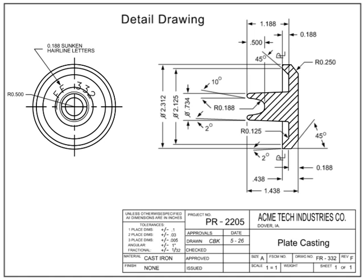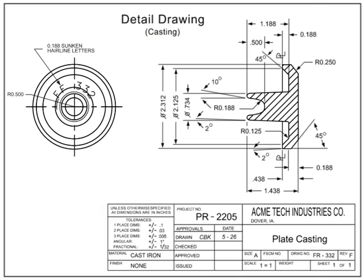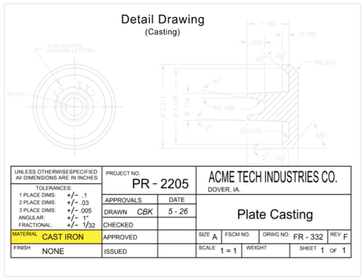As such, there are also a variety of detail drawings depending on the way in which a part is generated. A casting drawing is a type of detail drawing for parts made by casting or molding. The material for the part is typically called out in the material block, although it can sometimes be found in the notes section.